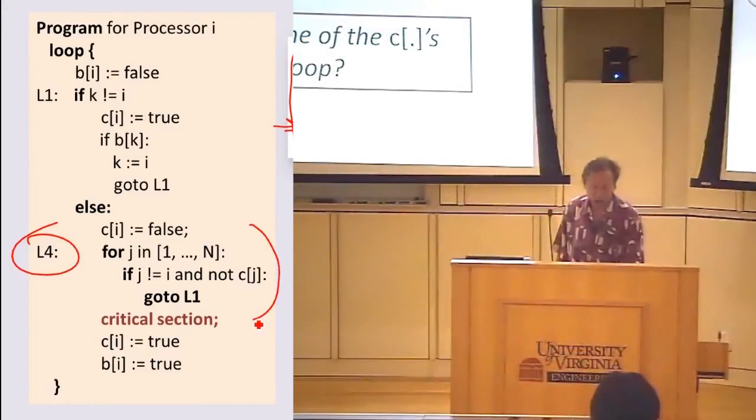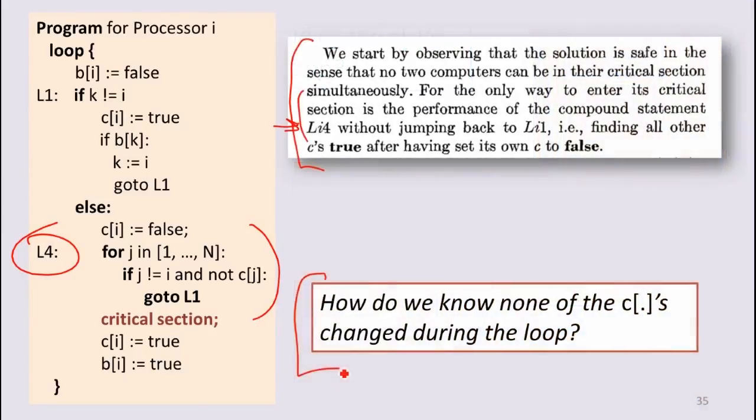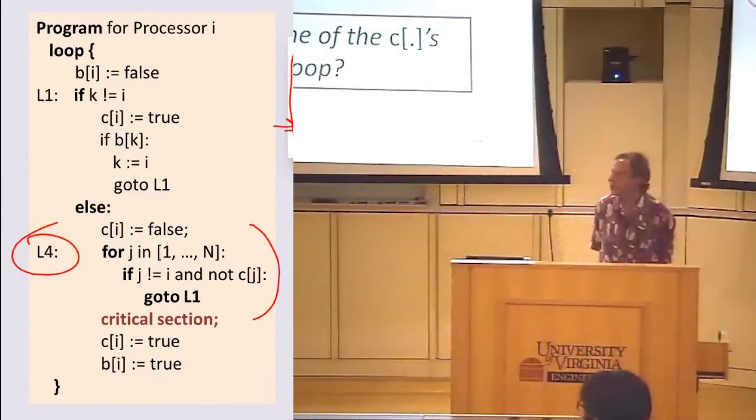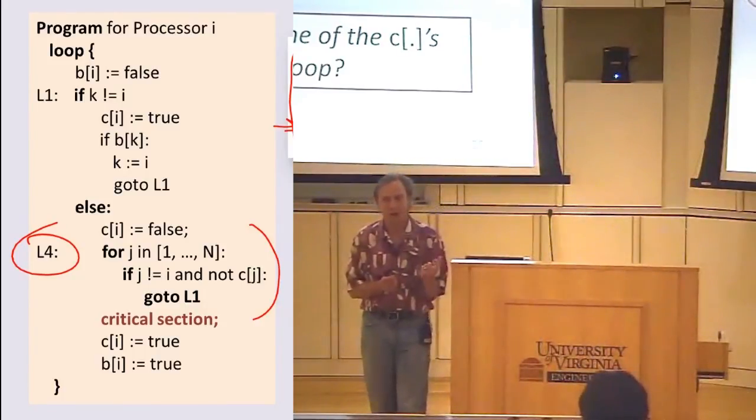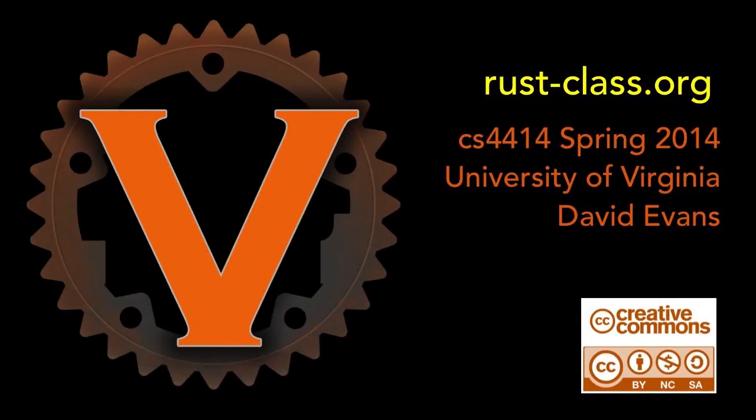We also need to know that none of these values could change during the loop. How do we know that? I will leave that for you to think about for next class. An important part of knowing that we provide mutual exclusion is knowing that if we get through that loop, no other thread could have got through it at the same time.